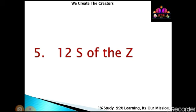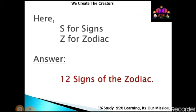Next: 12 S of the Z. Here S for signs, Z for zodiac. Answer: 12 signs of the zodiac.